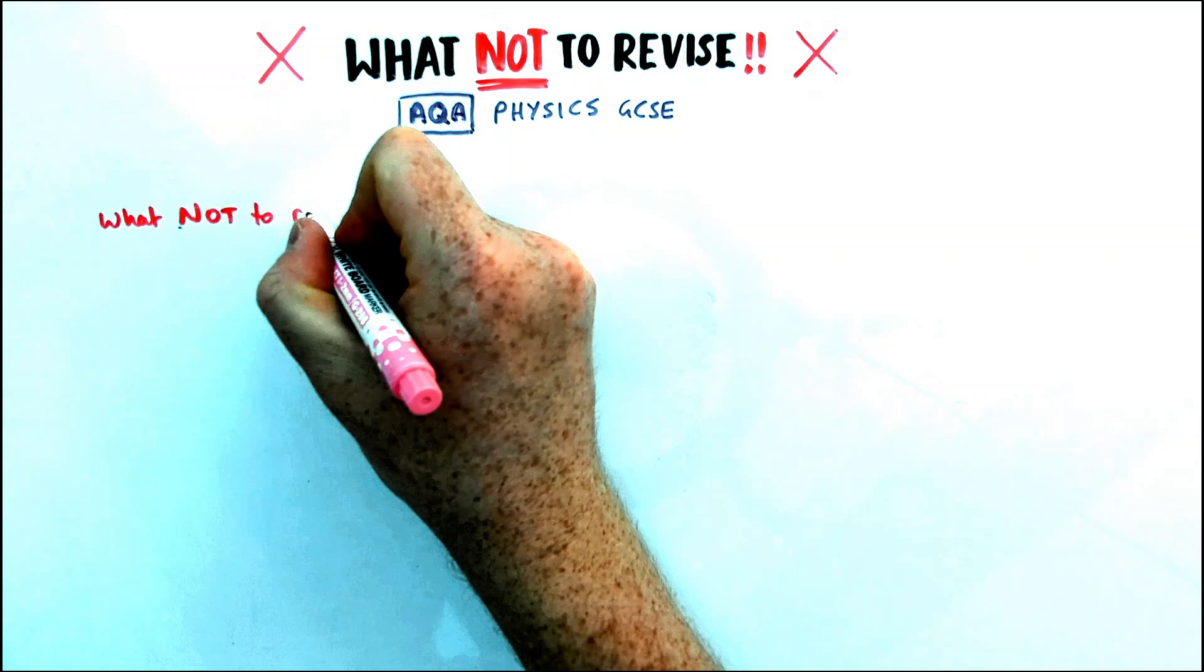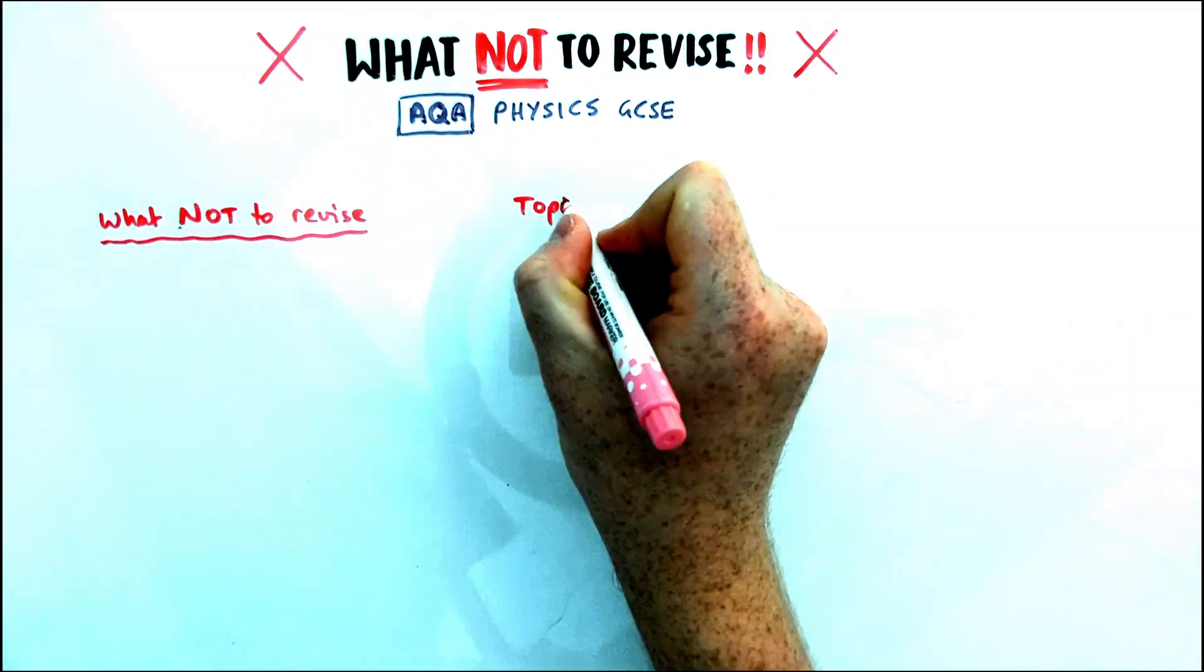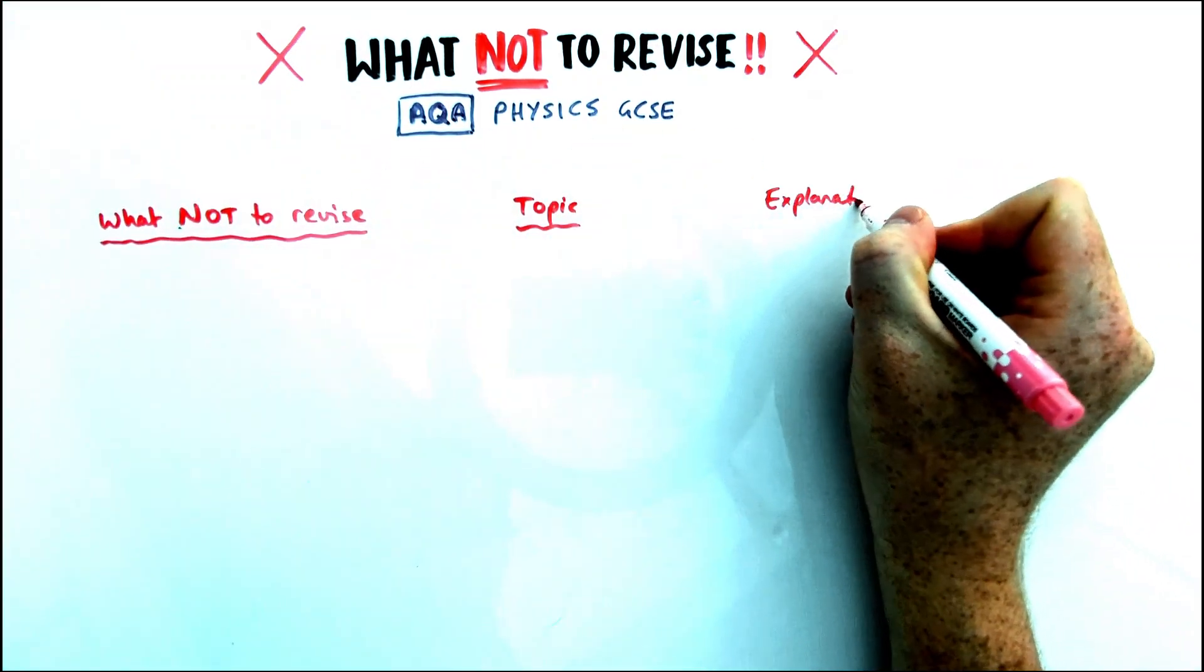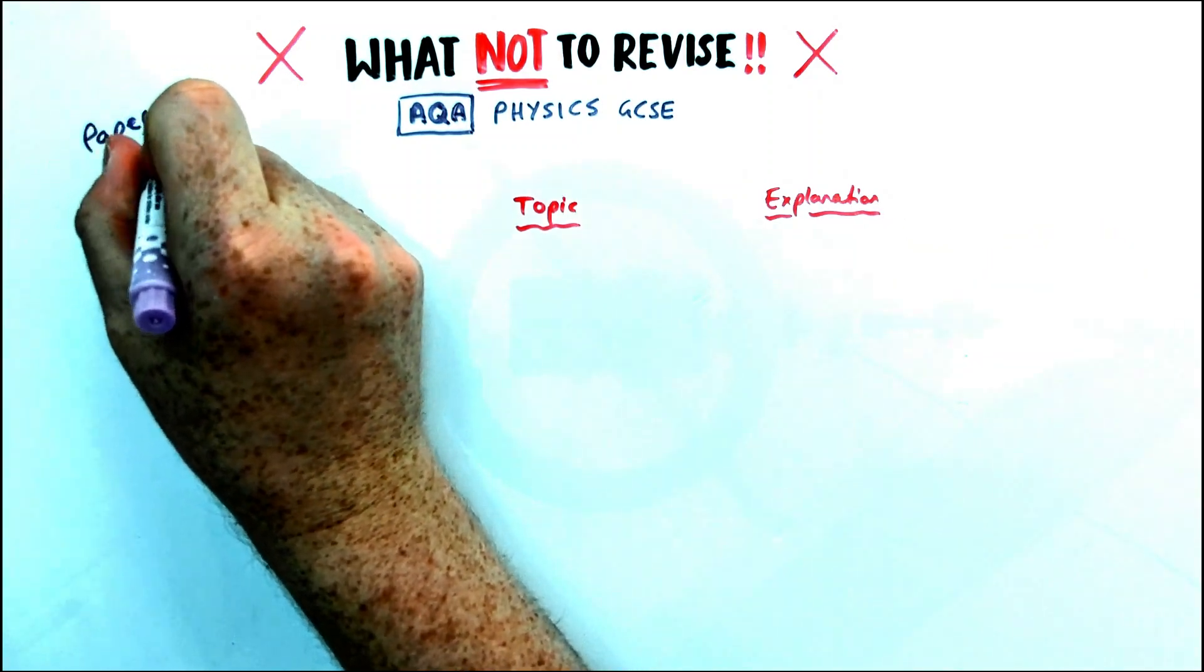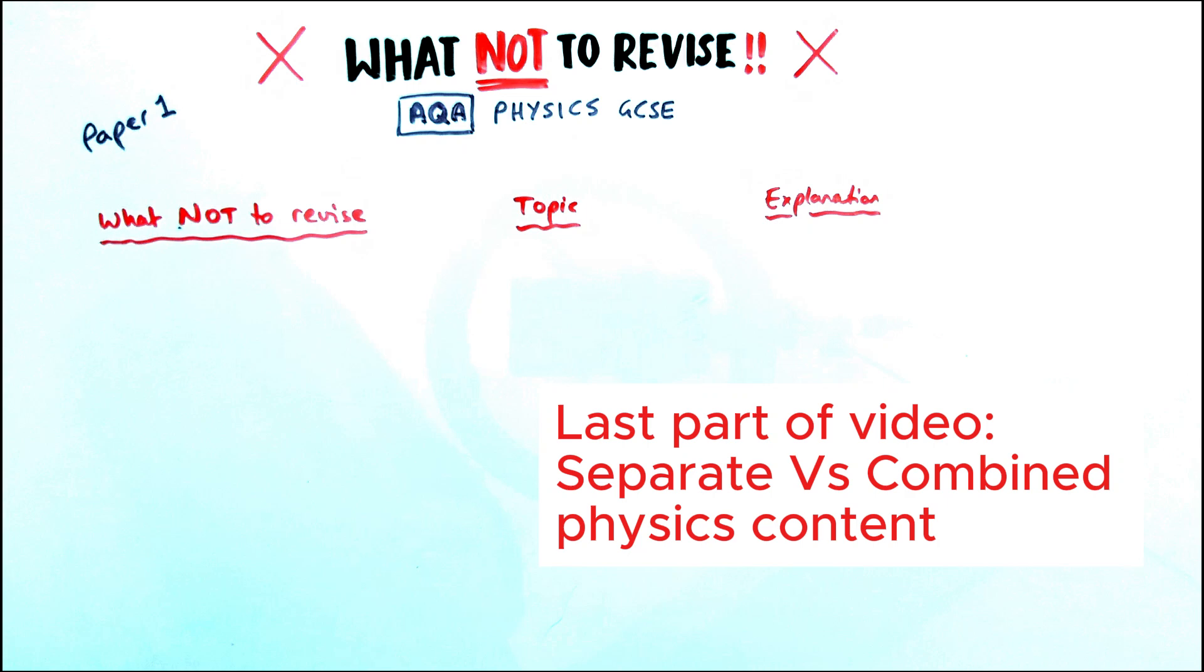For the first half of the video, we're going to look at paper one: what not to revise, what topic you might find it in, and an explanation for what you should revise instead. At the end of the video, I'll also go through the difference between combined and separate science and what you should avoid if you're a combined science student.